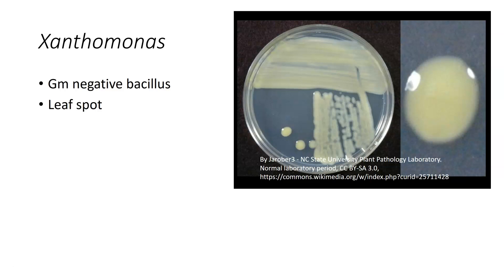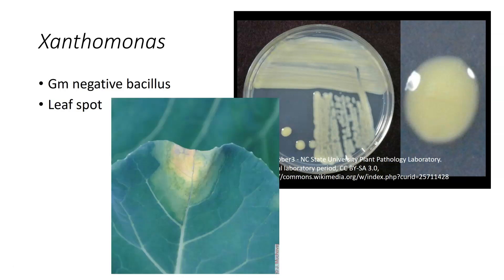They do a lot of different things. Most Xanthomonas are going to give you some sort of leaf spot, and they occur on many different plants. This shows you Xanthomonas campestris on broccoli. You can see how it starts at the hydathode and migrates down the vascular system. It's very difficult to find broccoli growing somewhere without this particular organism associated with it.